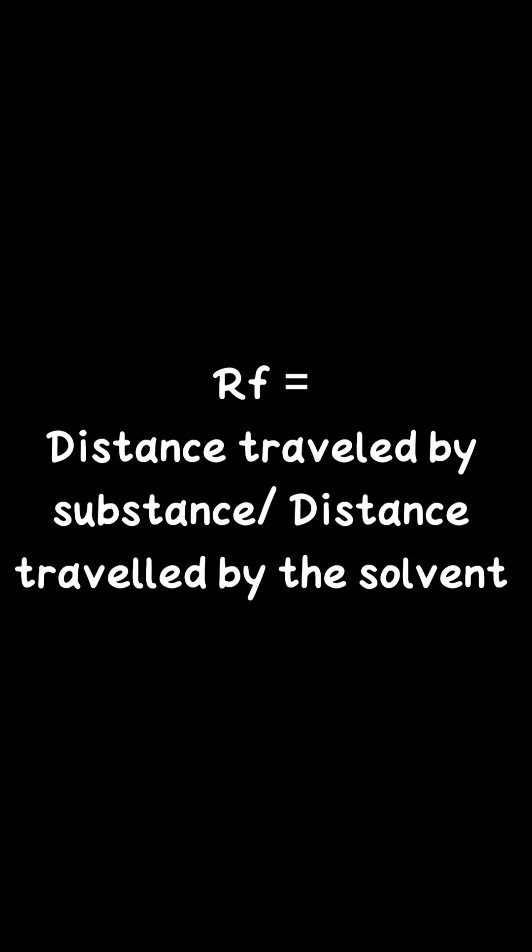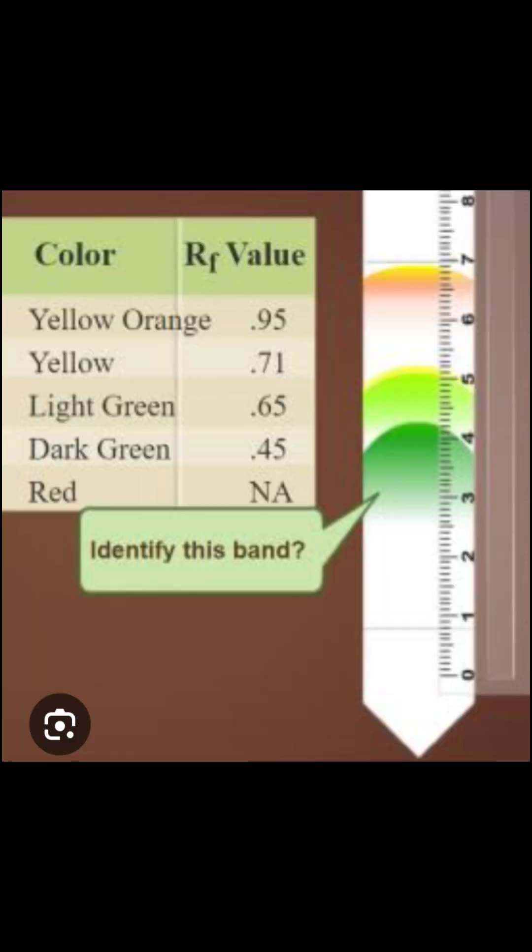To analyze the results, measure the distances to calculate the RF value — that is, the retention factor. The formula is: RF = distance traveled by the substance divided by the distance traveled by the solvent. The RF value is a measure of how far a substance travels in a chromatographic system relative to the solvent front.